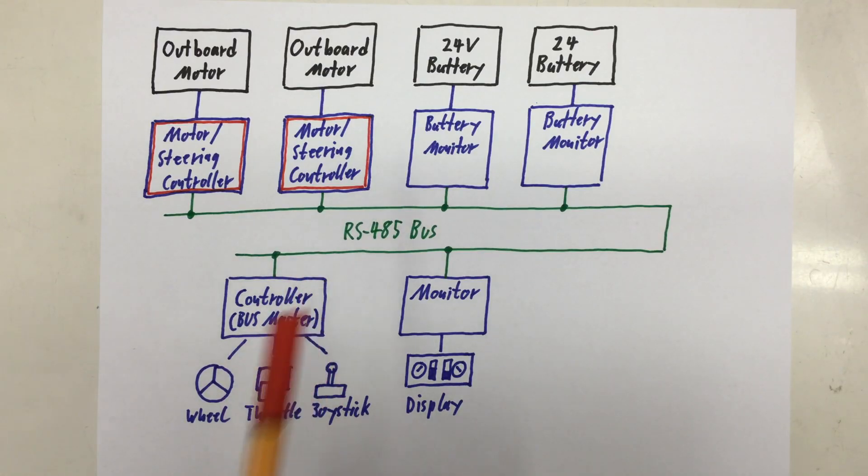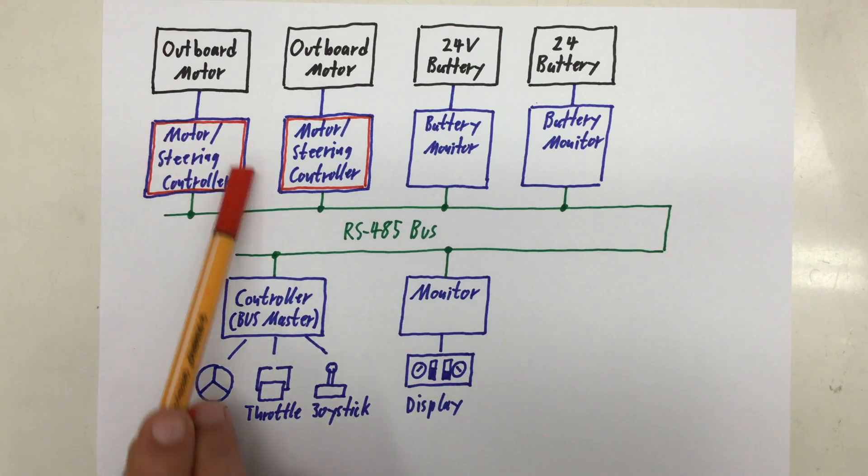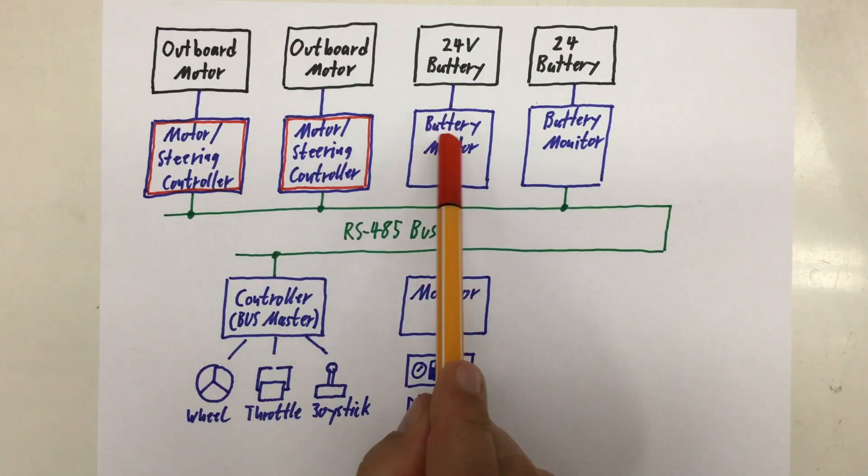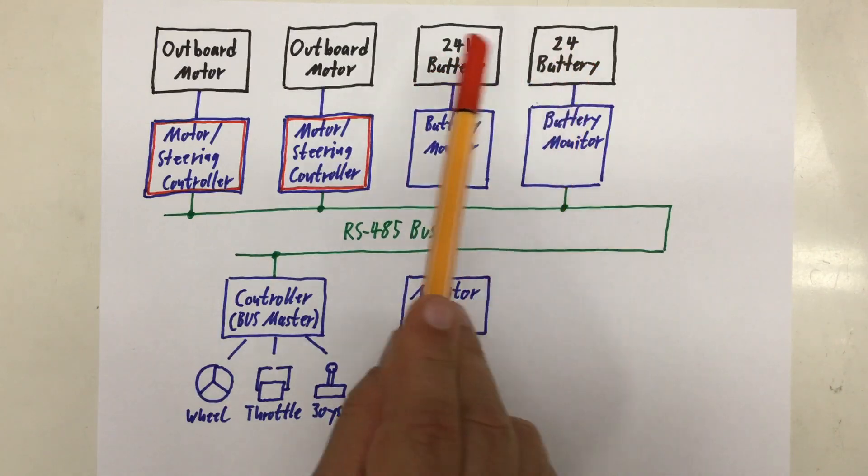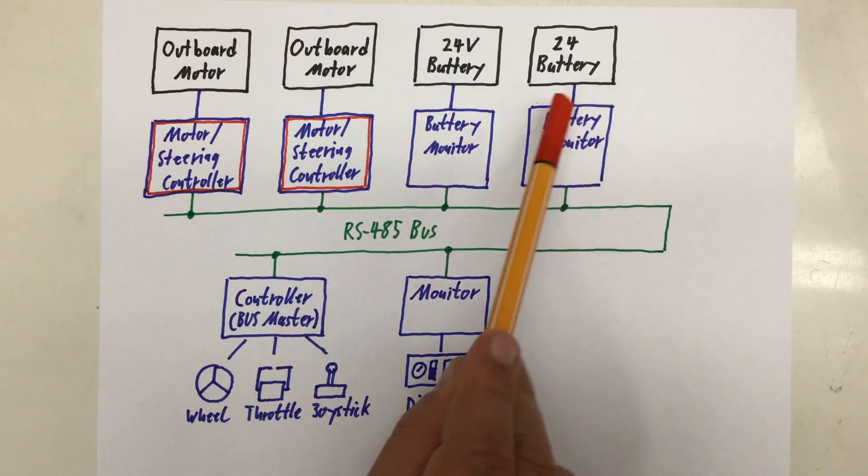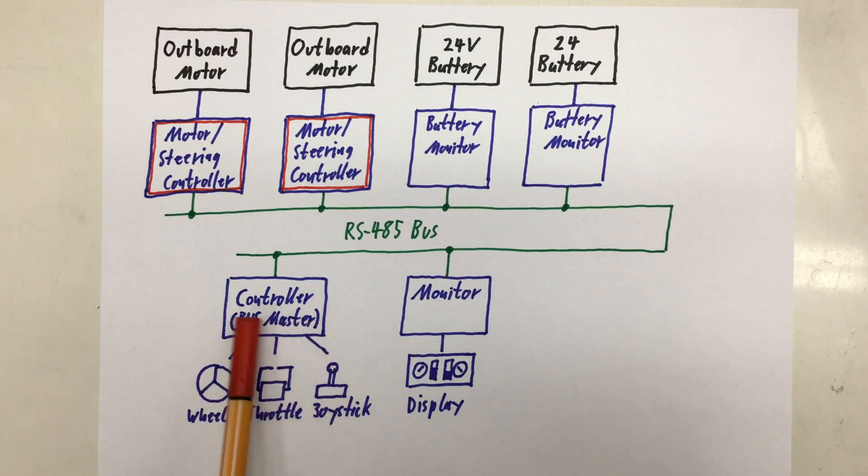Before I leave you, I want to give you the big picture. So our current project is about building some motor and steering controllers for two outboard motors. Currently, I plan to have two 24-volt batteries powering these motors. And of course, at one point, we will need battery monitors for these batteries. On the other side, we have a controller, which is the bus master, and that has the wheel, the throttle, and probably a joystick attached. And that controller obviously sends commands to our motor steering controllers.